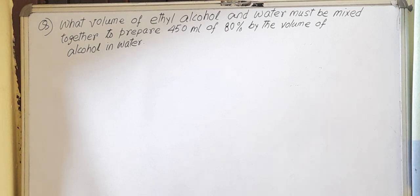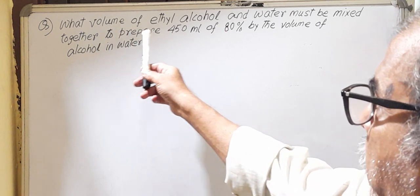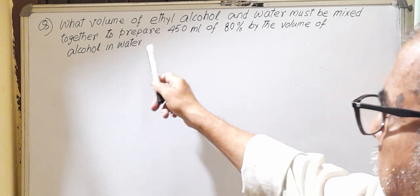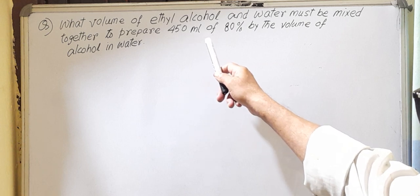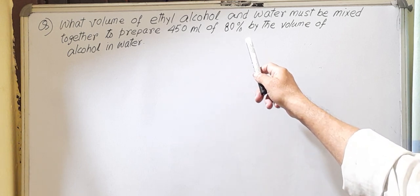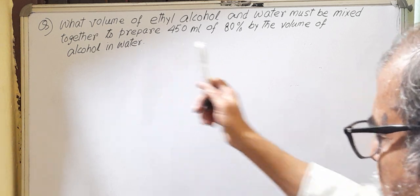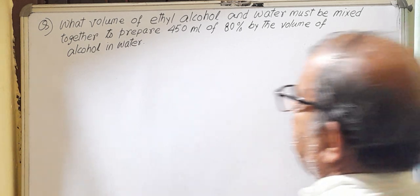So here the question is: what volume of ethyl alcohol and water must be mixed together to prepare 450 milliliters of 80% by the volume of alcohol in water? So you can write like this.